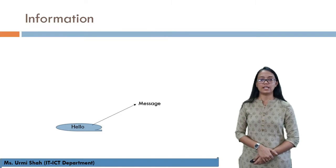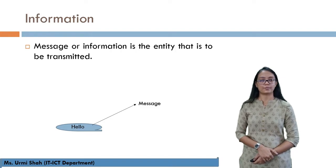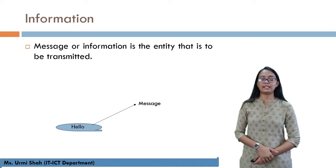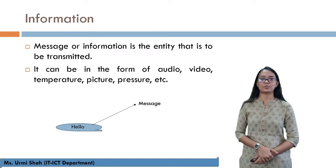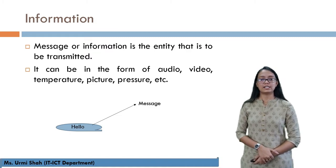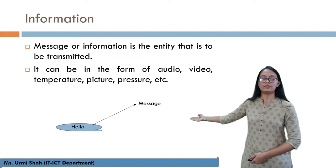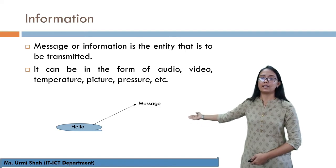Now let's understand every block of the communication system. Information is a message that we convey — basically, a message or information is the entity that is to be transmitted. This information can be in the form of audio, video, temperature, picture, or pressure. For example, if a person wants to transmit the message 'hello' to another person, then this 'hello' is the information.